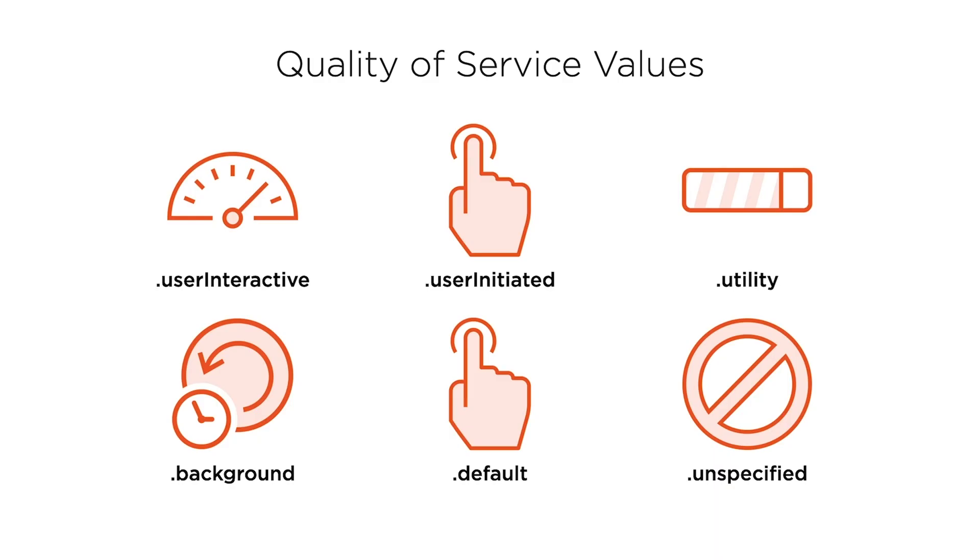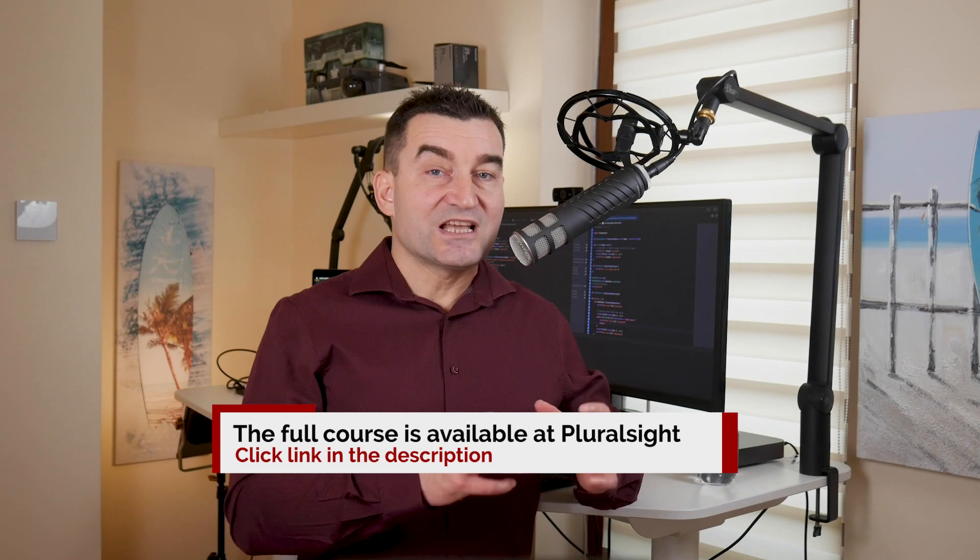Beyond the main queue and global system queues, we can also create private dispatch queues. When we need to run serial tasks on a queue other than the main queue, global queues won't work since they're concurrent — so a private dispatch queue is the solution. Concurrent private queues can also be created, but it's recommended to rely on global system queues whenever possible, as each new private queue may increase thread consumption. There is a way to create a private serial queue and delegate its tasks to a global system queue without losing the serialized execution model.